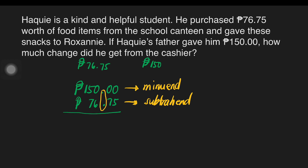We will subtract 5 from 0. We cannot do that since it's 0. Since we cannot subtract from 0, we will consider borrowing from the 5 — this becomes 4. This becomes 10, becomes 9, and becomes 9. 10 minus 5 is equal to 5. 9 minus 7 is equal to 2. Copy the decimal point.